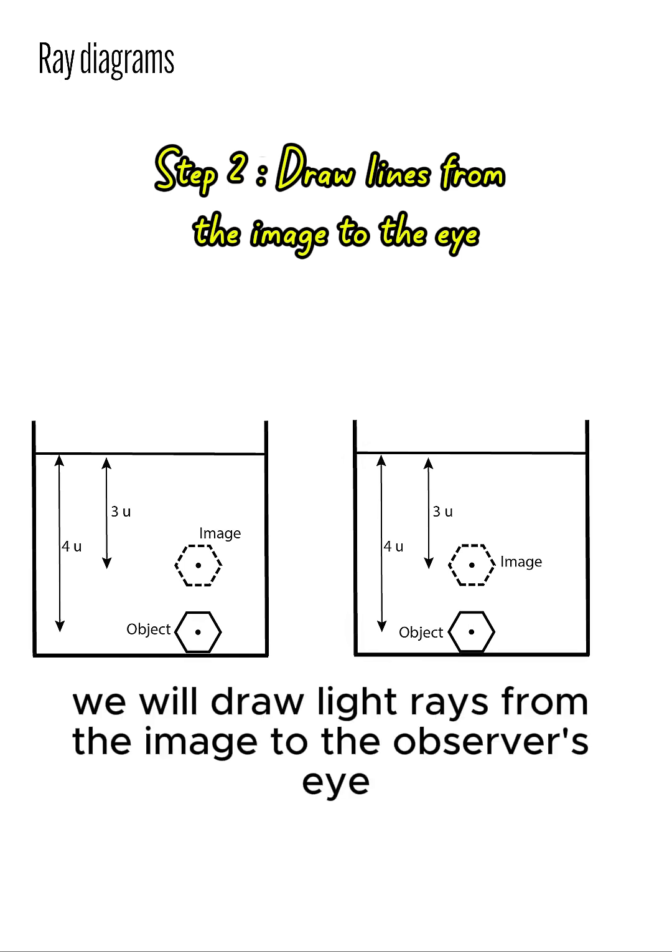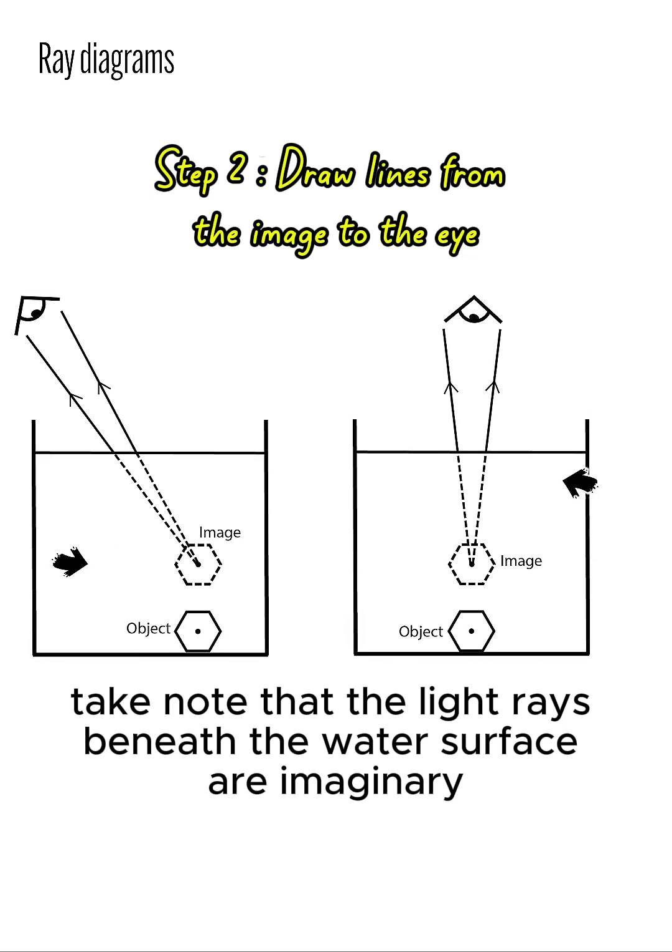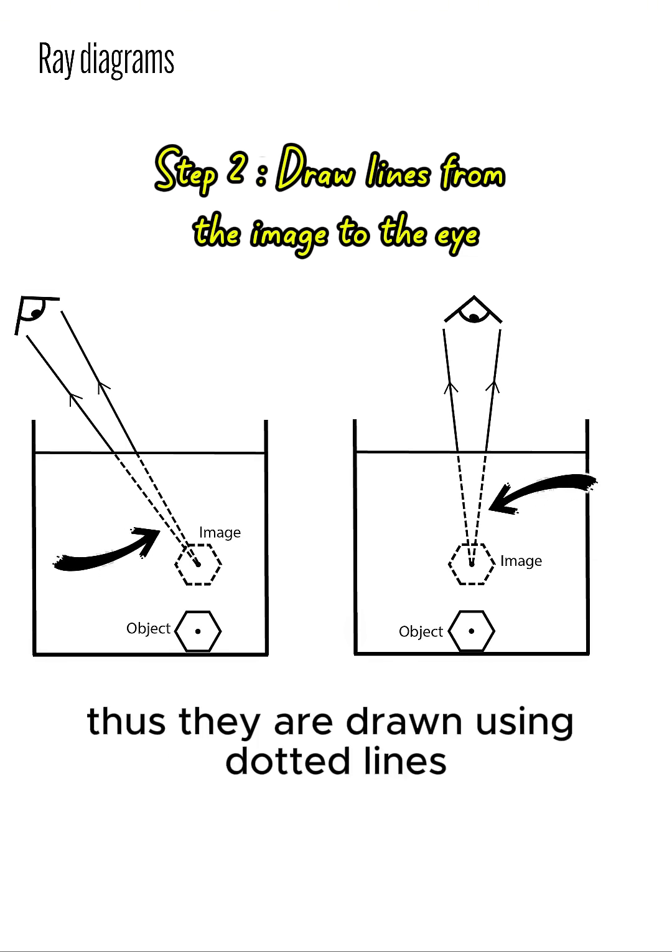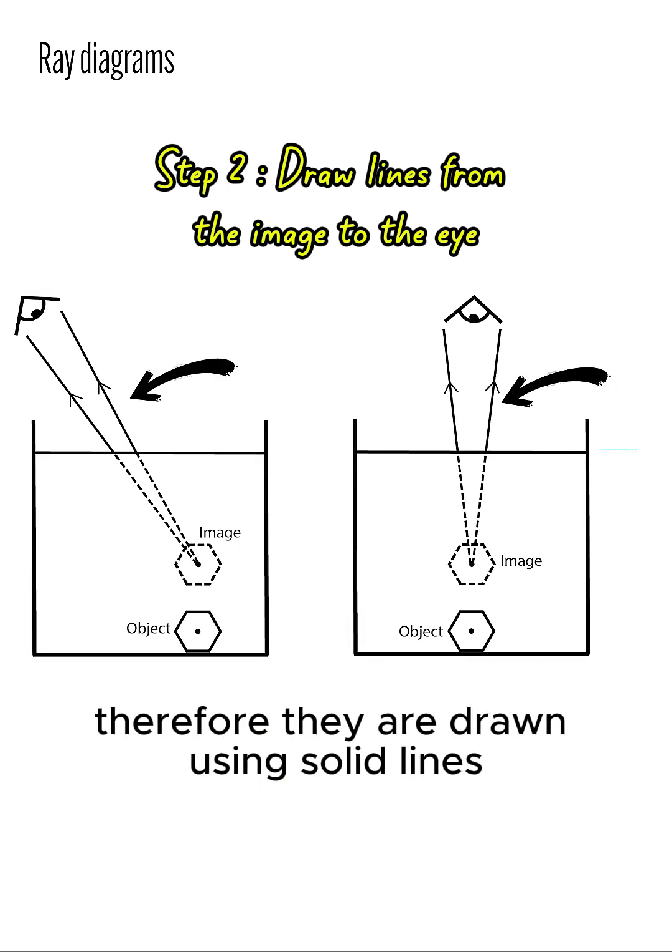Second, we will draw light rays from the image to the observer's eye. Take note that the light rays beneath the water surface are imaginary, thus they are drawn using dotted lines. On the other hand, the light rays emerging from the water boundary are real, therefore they are drawn using solid lines.